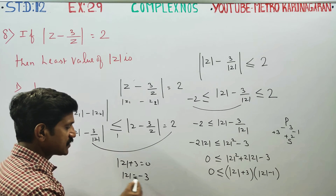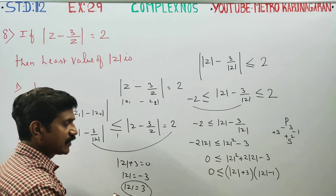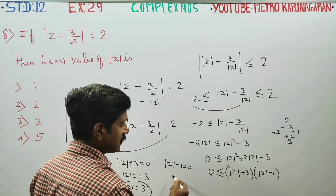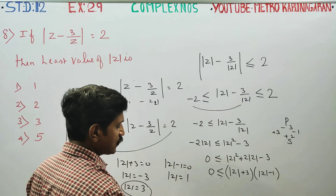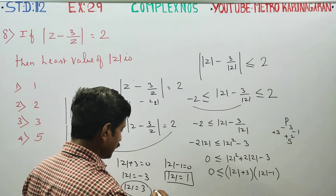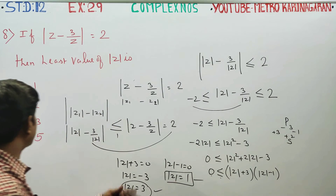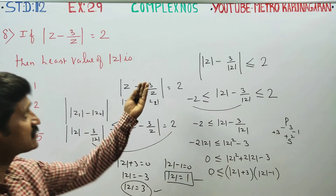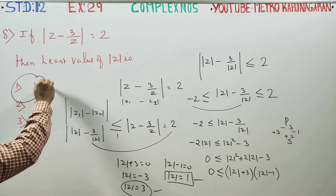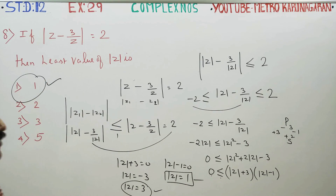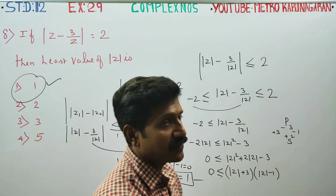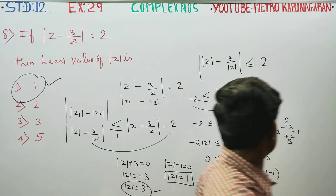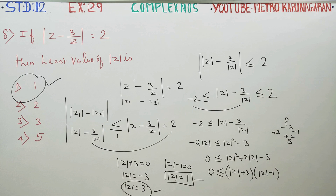If your answer will be the least value, Z is less than or equal to 0. Your answer will be more or less one of the least values. If you go to the other side, there are two values. The least value is 1. The least value is 1. Thank you.